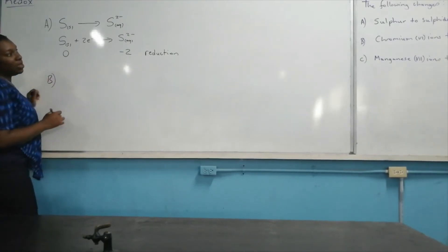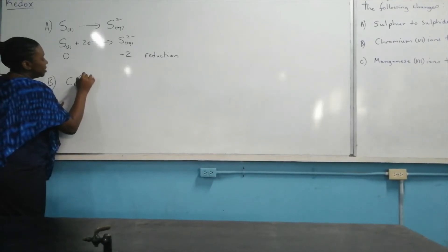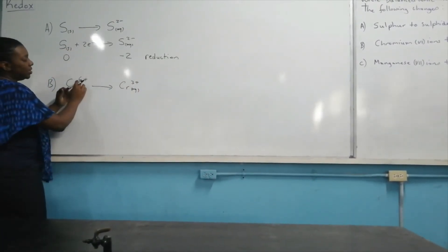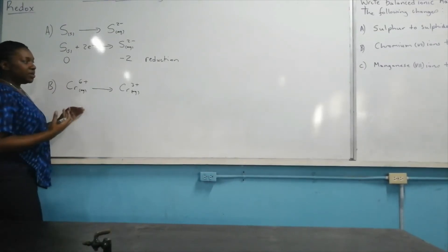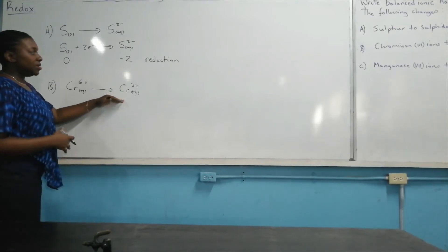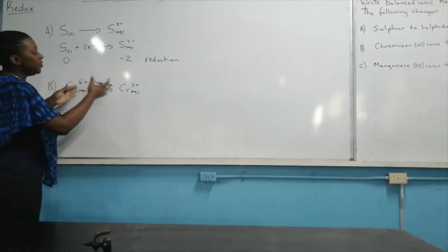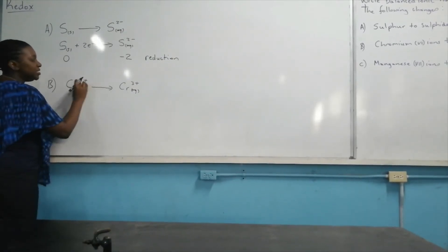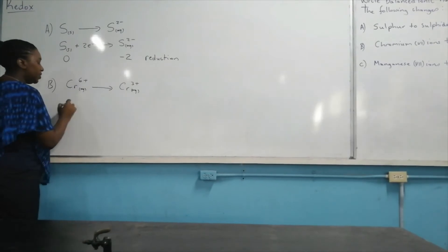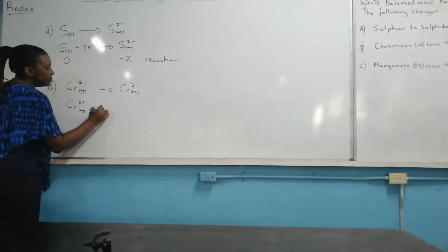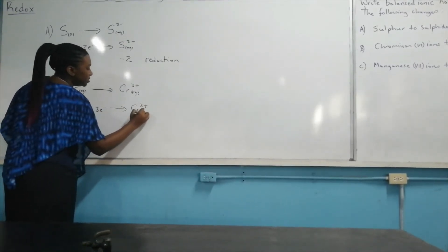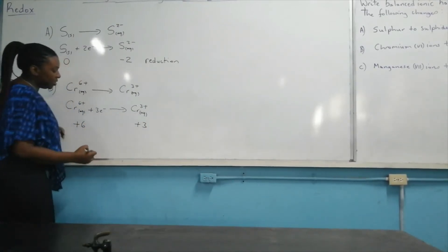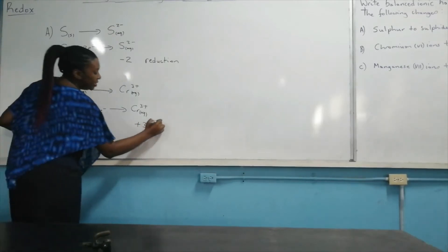For part B, we have Cr⁶⁺ (aq) changing to Cr³⁺ (aq). The amount of positive charge is reducing. The only way the positive charge can be reduced is if electrons are gained. There is a difference of three between chromium 6 and chromium 3, so Cr⁶⁺ (aq) plus three electrons would form Cr³⁺ (aq). We are moving from an oxidation state of plus six to plus three — a decrease in oxidation number — so this is reduction.